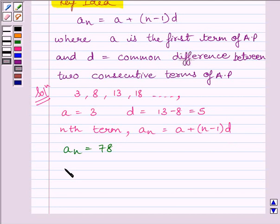Substituting the corresponding values in the formula, we get 78 is equal to 3 plus n minus 1 multiplied by 5.